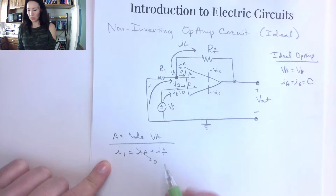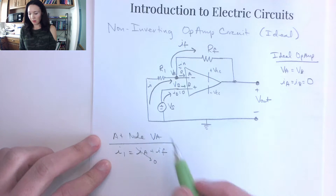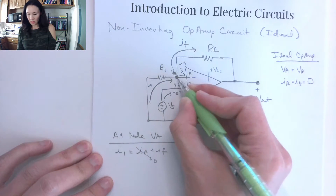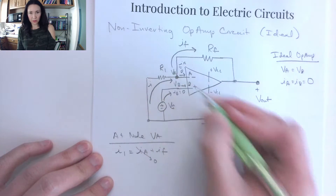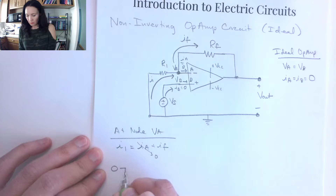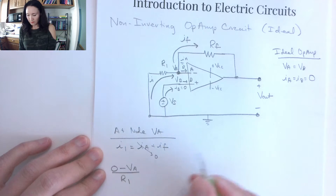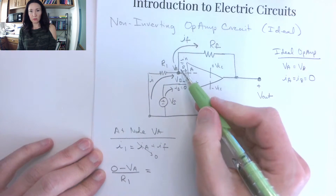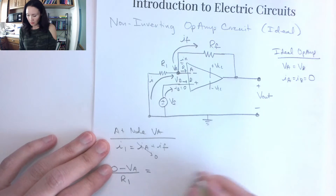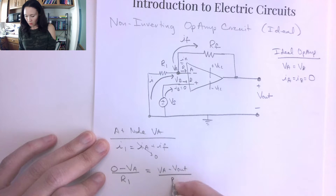Once we have our KCL equation that I1 equals IF, we can replace these currents in terms of V and R. The current I1 is the voltage between this node and ground divided by the resistor between — so zero minus VA over R1. That equals IF, which is VA minus Vout over RF.